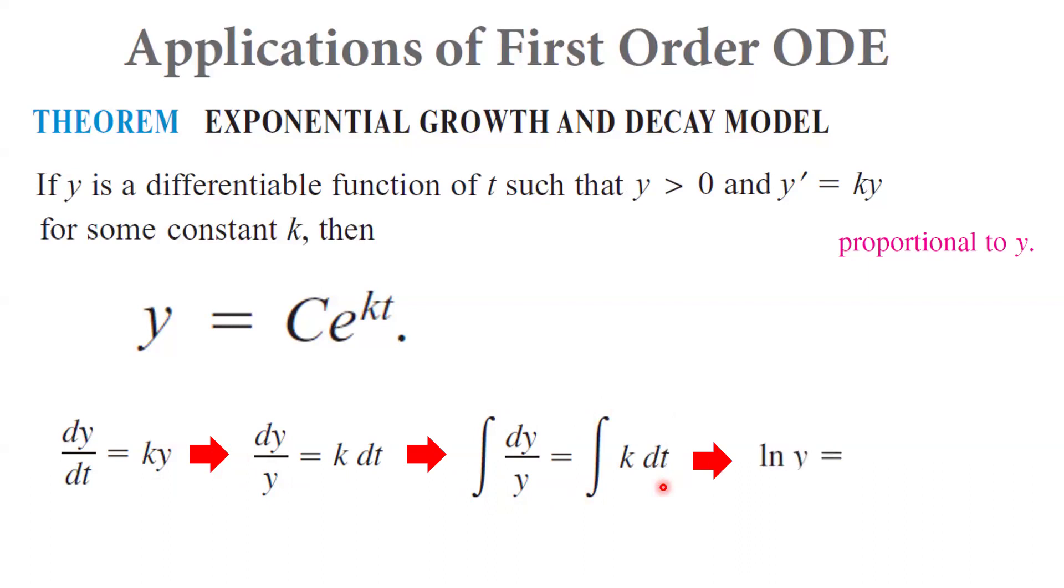In turn, we get ln of y, which is kt plus c sub 1. Now we can use some algebra and simplify this. y equals e to power kt plus c1. And if we separate the base, y equals e to power kt times e to power c1. From the plus in the power, you can separate with the same base as multiplication.